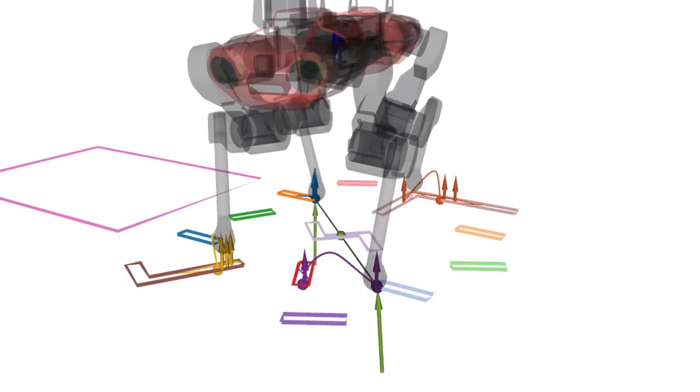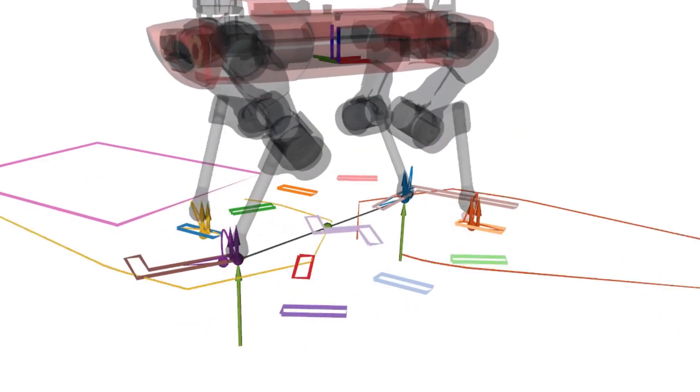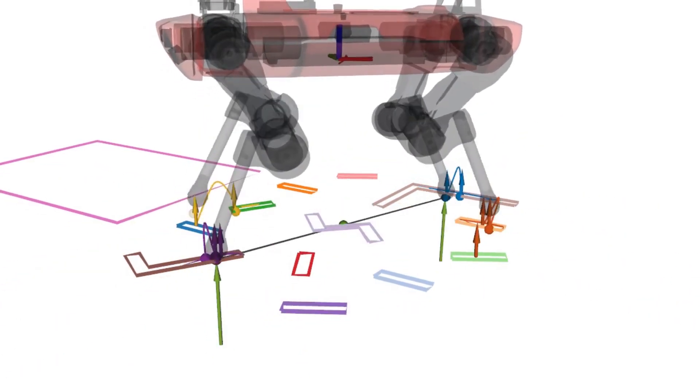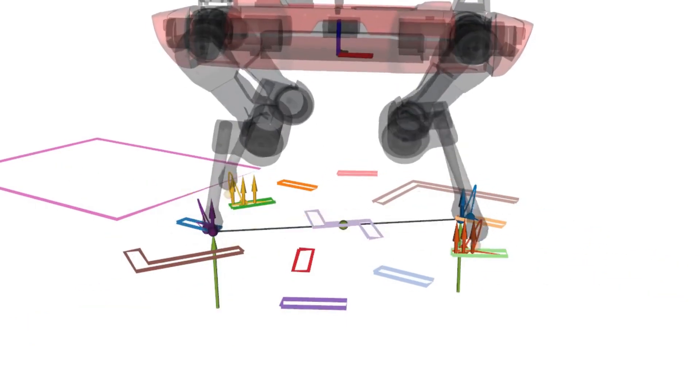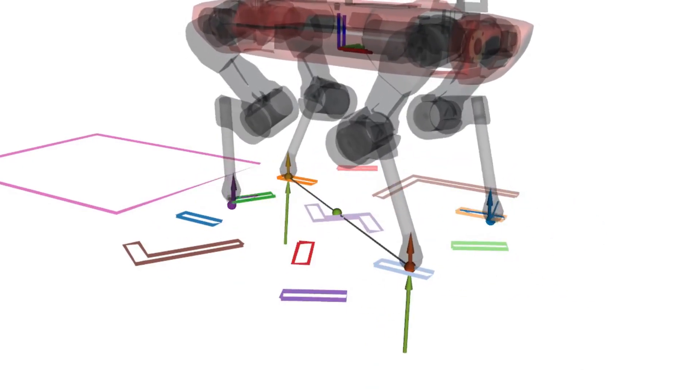After selecting a valid target region for upcoming footholds, a shrinking barrier constraint enforces that a foot safely lands in the target area. The MPC formulation then coordinates the base motion and exact foothold location within the constraints to achieve stable locomotion.